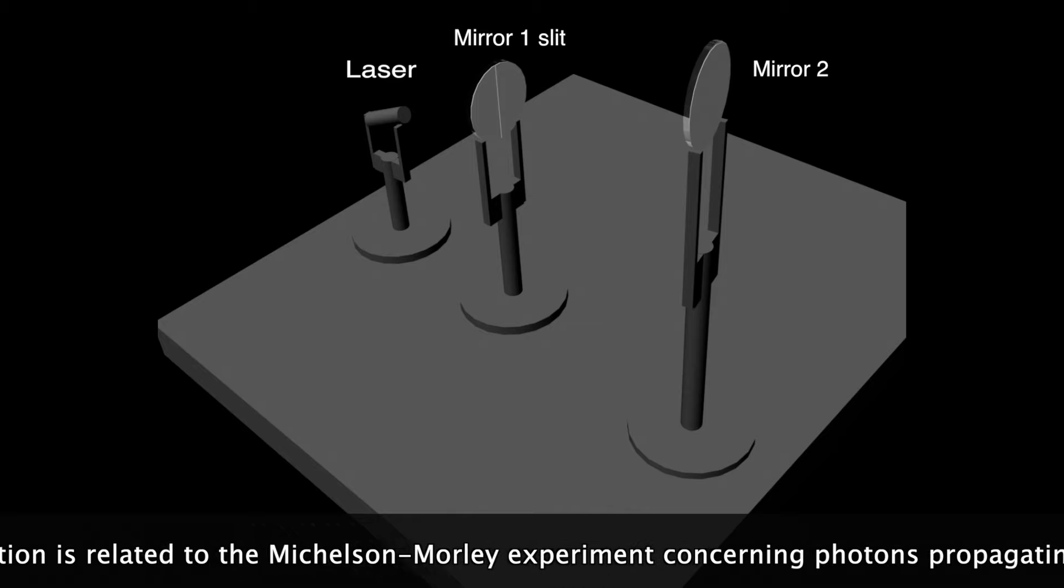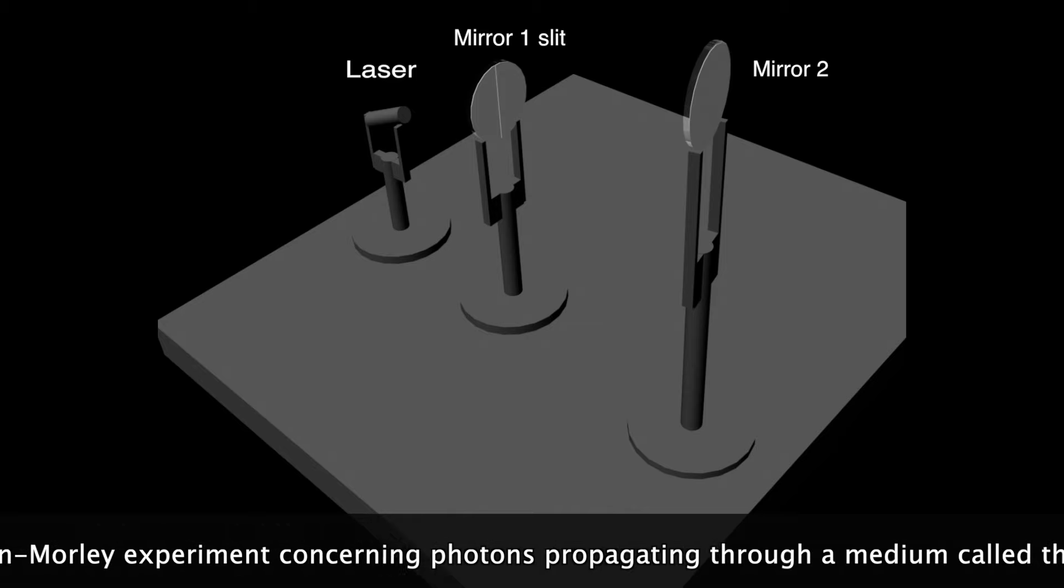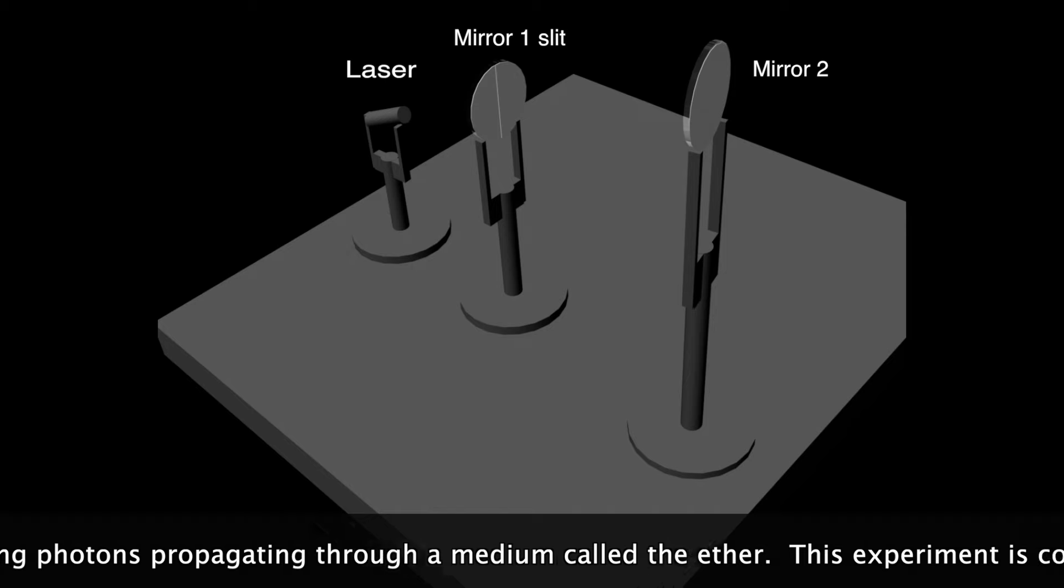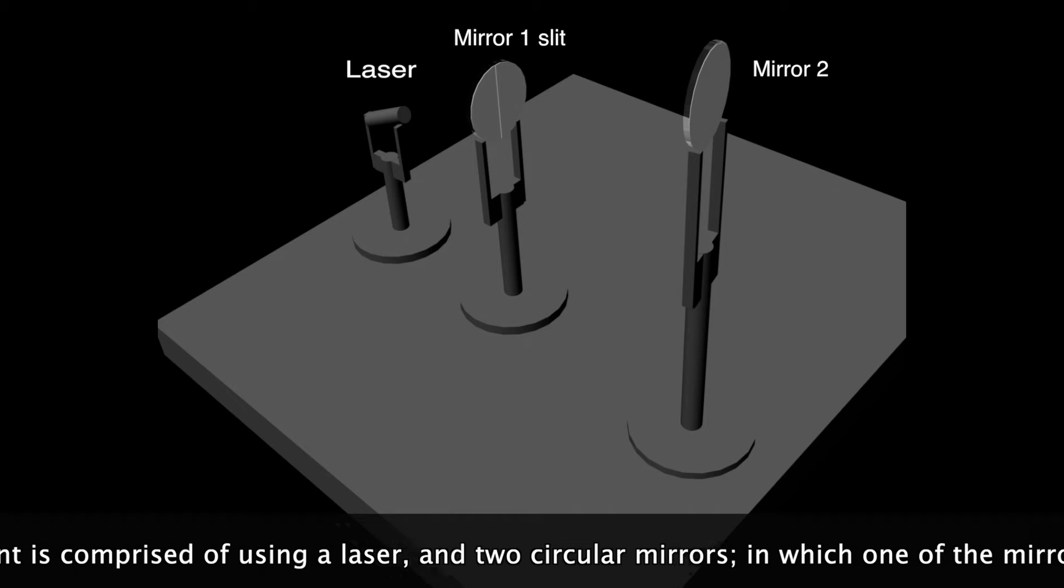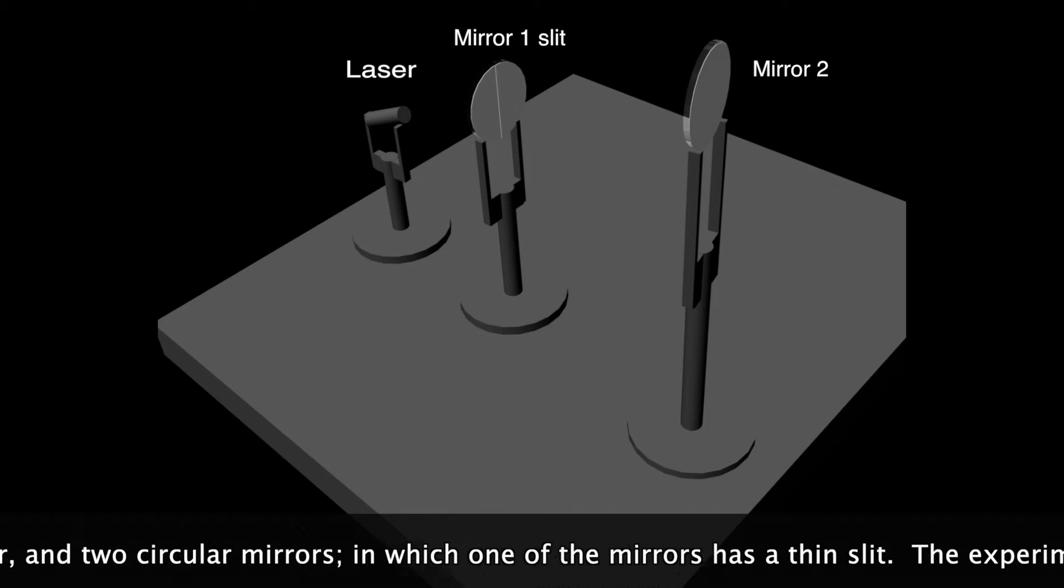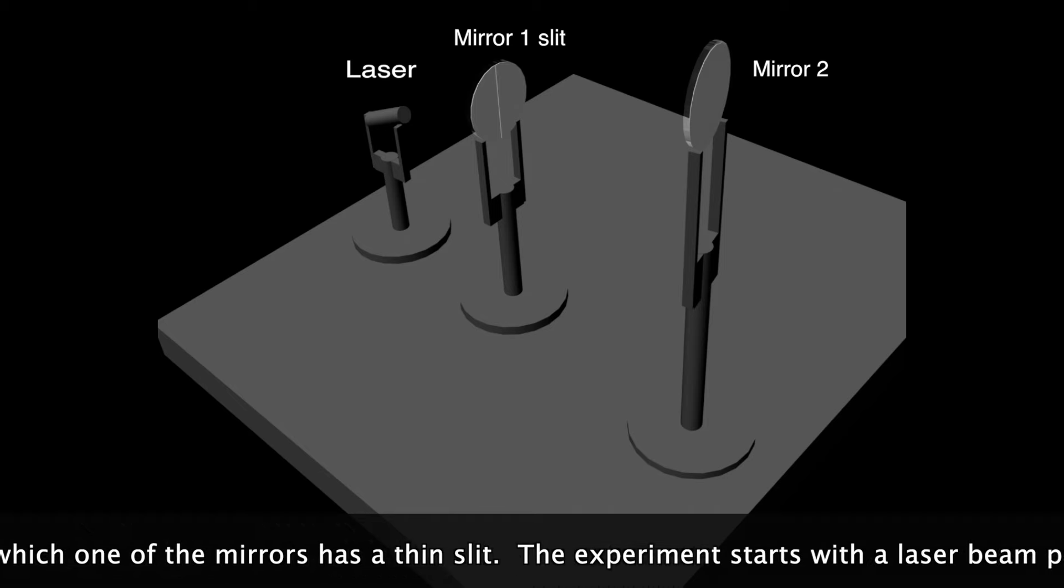This presentation is related to the Michelson-Morley experiment concerning photons propagating through a medium called the ether. This experiment is comprised of using a laser and two circular mirrors in which one of the mirrors has a thin slit.